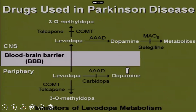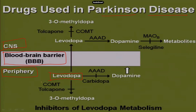Looking at the combined therapy diagram: the blood-brain barrier separates the peripheral system below from the CNS above. You want levodopa to cross the blood-brain barrier and be found only in the CNS. If levodopa moves around in the periphery, AAAD will convert it to dopamine, which cannot enter the CNS. Therefore, the metabolism of levodopa in the periphery must be blocked at all costs — primarily achieved by blockade of peripheral AAAD using carbidopa.